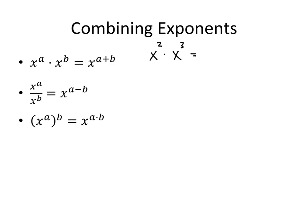Why is x squared times x cubed equal to x to the fifth? Well, x squared is x times x, and x cubed is x times x times x. So this one was the x squared, and this one was the x cubed. And when we multiply five x's together — count them: 1, 2, 3, 4, 5 — that's just x to the fifth.